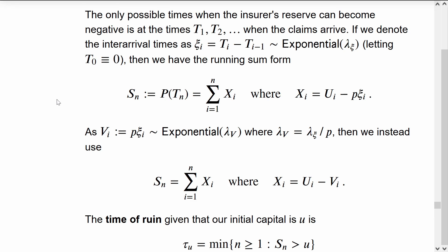This simplifies our running sum to be S_n is a cumulative sum of the X_i's, and each X_i is U_i subtract V_i, two independent exponentially distributed variables.